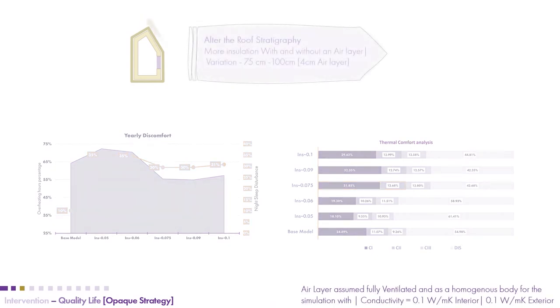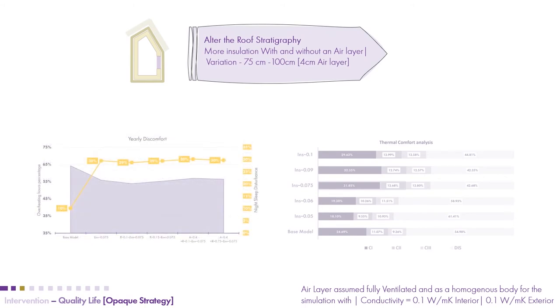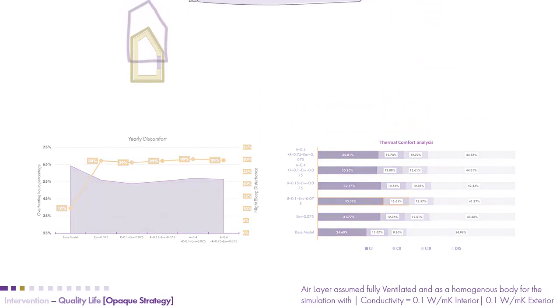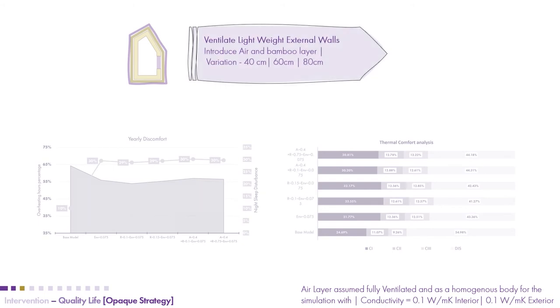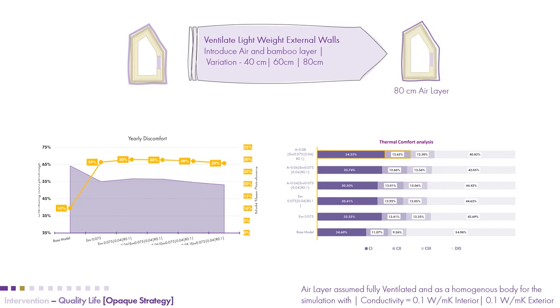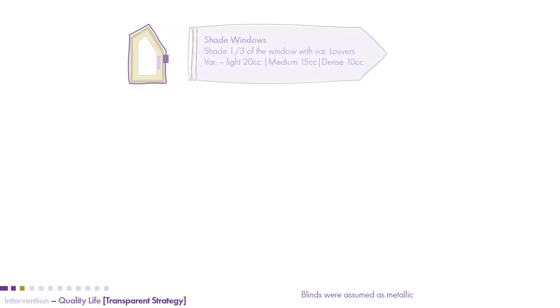Next was looking at alterations to the roof, which was important because of the site's exposure. Adding an extra layer of insulation as well as air layers improved the whole building. Concerning facade ventilation, we looked at different air layer thicknesses. As the air layers increased up to 80 centimeters, the building responded more positively, so we chose the 80 centimeter thick air layer. Windows were also contributing to energy gains but could not be considered in isolation without accounting for their effects on the ASE and SDA.